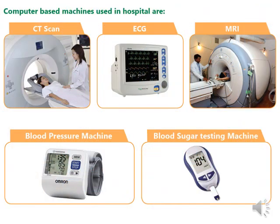Computer-based machines used in hospitals are: first, CT scan; second, ECG; third, MRI; fourth, blood pressure machine; and fifth, blood sugar testing machine.